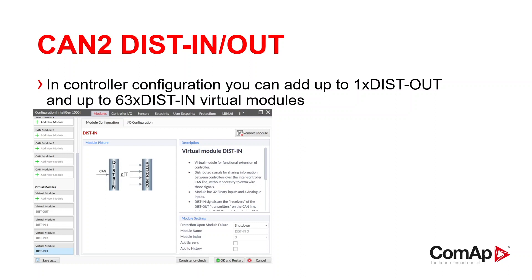CAN2 dist.in and dist.out virtual modules can be configured in controller configuration in the virtual module section. In controller configuration you can add up to 1 dist.out, which stands for outputs, and up to 63 dist.in virtual modules.